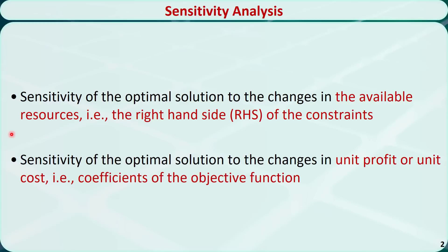The first question is: how do changes in the available resources affect the optimal solution? The available resources are represented by the right-hand side in the constraints. The second question is: how do changes in the unit profit or unit cost affect the optimal solution? The unit profit or unit cost are represented by the coefficients in the objective function.